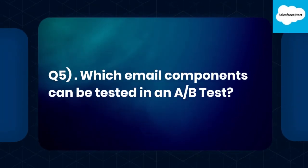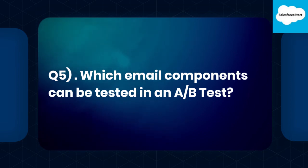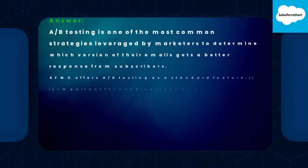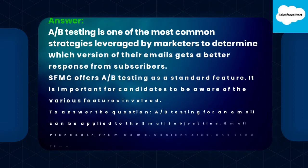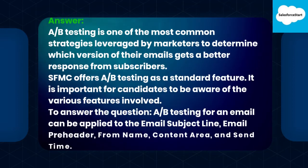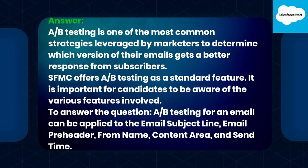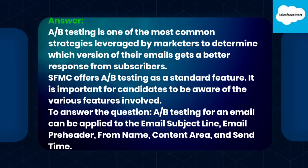Q5: Which email components can be tested in an A/B test? A/B testing is one of the most common strategies leveraged by marketers to determine which version of their emails gets a better response from subscribers. SFMC offers A/B testing as a standard feature. It is important for candidates to be aware of the various features involved. A/B testing for an email can be applied to the email subject line, email pre-header, from name, content area, and send time.